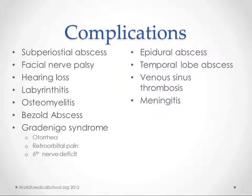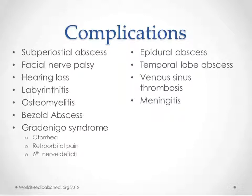Bezold's abscess is a more superficial abscess that can actually be seen and drained from the outside. Gradenigo syndrome is the complex of otorrhea, retroorbital pain, and sixth nerve deficit, which can all be caused by mastoiditis spread. In more serious cases with intracranial problems, you get epidural abscesses — which can have a mass effect causing seizures — as well as temporal lobe abscess, venous sinus thrombosis and its complications, and meningitis.